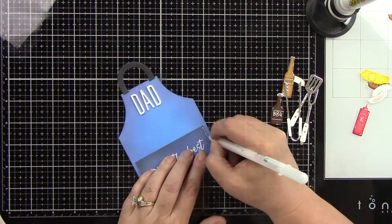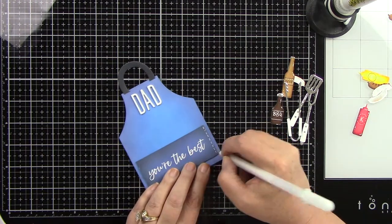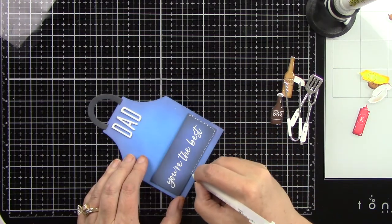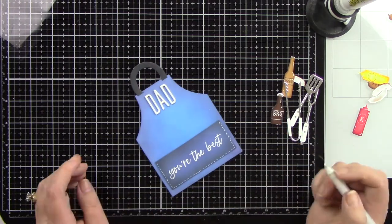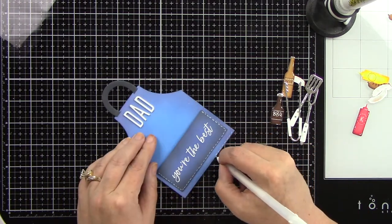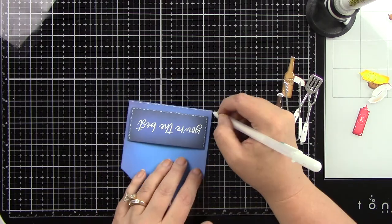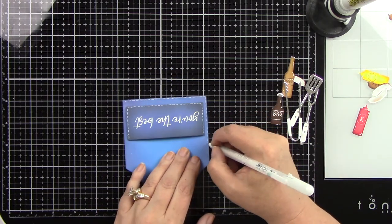Now I wanted to add a little bit of detail to the apron itself, so I'm coming in again with my white gel pen. I'm going to add some stitching lines to the apron. I'm adding it to the pocket on the sides and the bottom, and then I'm going to go all the way around the apron to add some stitching lines.